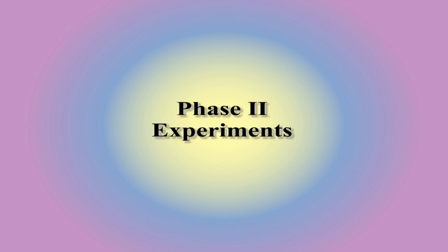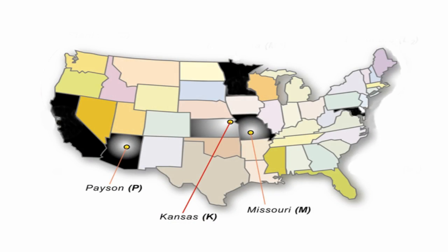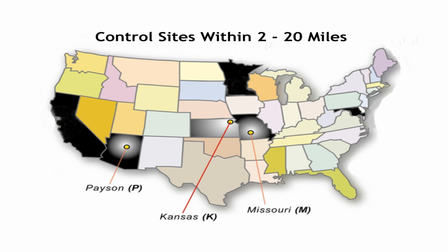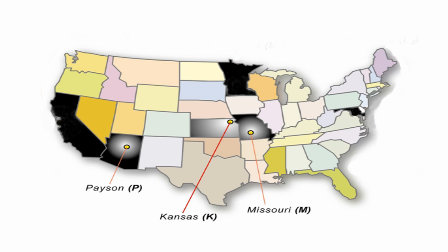Now let's look at the second phase of our experimentation. The second phase of our experimental research began with the replication experiment. We decided to replicate the first target experiment — that is, with the pH going up one full pH unit. We selected a number of sites in the U.S. and in Europe, and for the three initial intention host sites, we had a control site within two to twenty miles of each other. That's where we started the replication experiment.